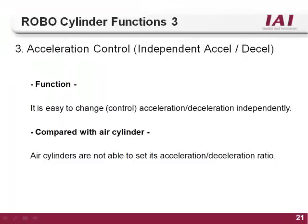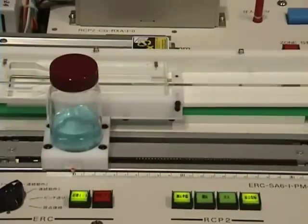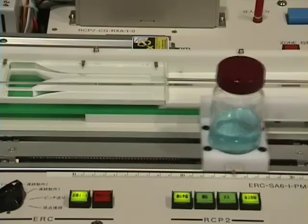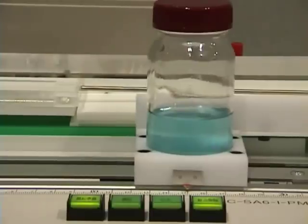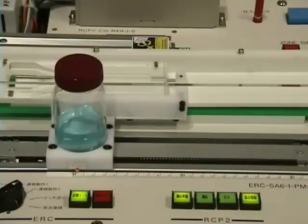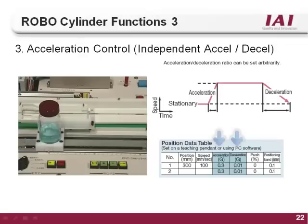The third function of the RoboCylinder controller is acceleration control. On an air cylinder, the speed is determined by the line pressure and flow control valves and cannot be changed for different positions. Because of this, air cylinders will slam into the end of stroke, causing part defects or damaging the actuator itself. With the RoboCylinder controller, you can set the acceleration and deceleration for every move. This allows you to have smooth start and stop motion, which causes fewer defects, gives individual control for every position, and allows for longer actuator life. The acceleration and deceleration is set inside the position table, with a separate column for each, so you can have a different ramp up speed than your ramp down speed.